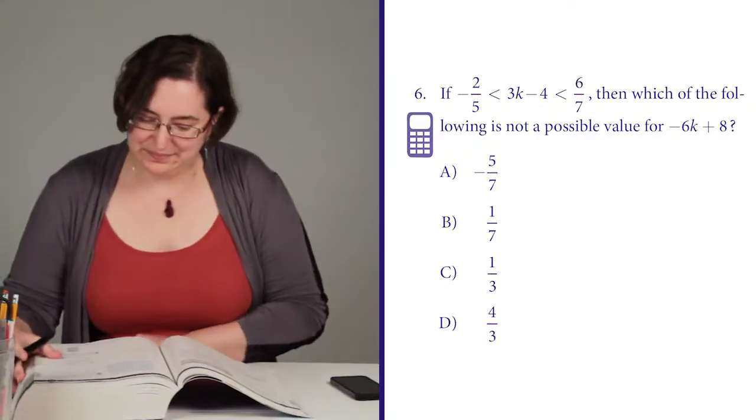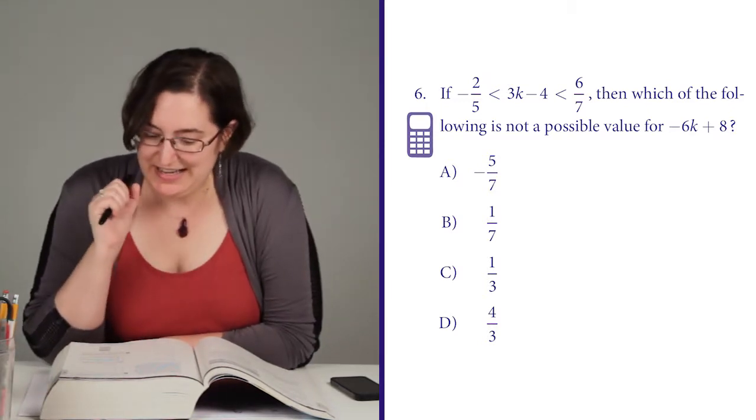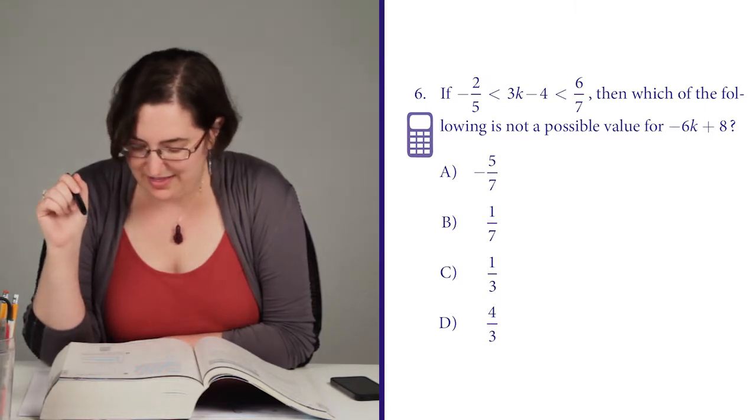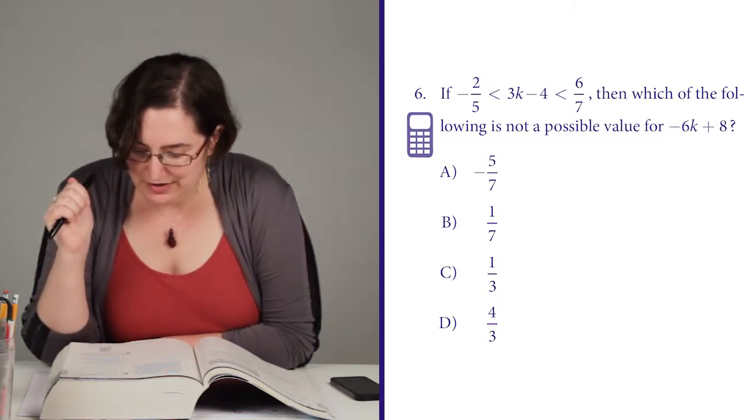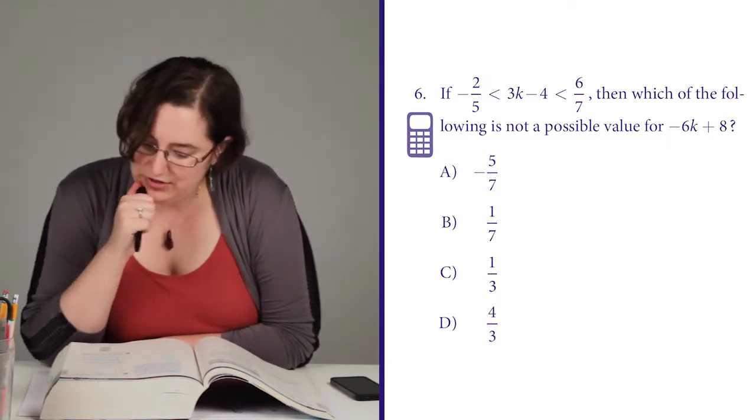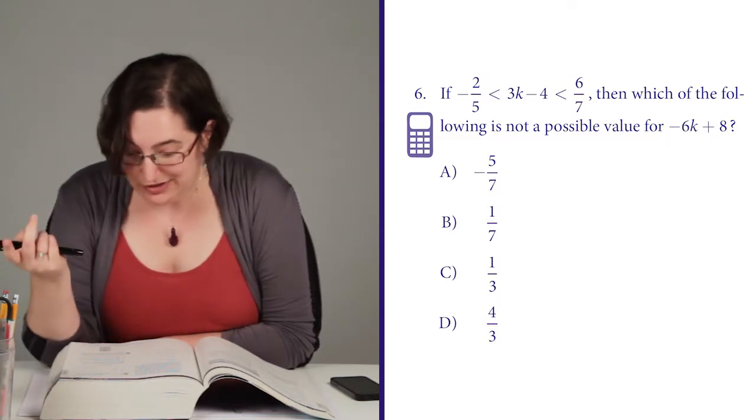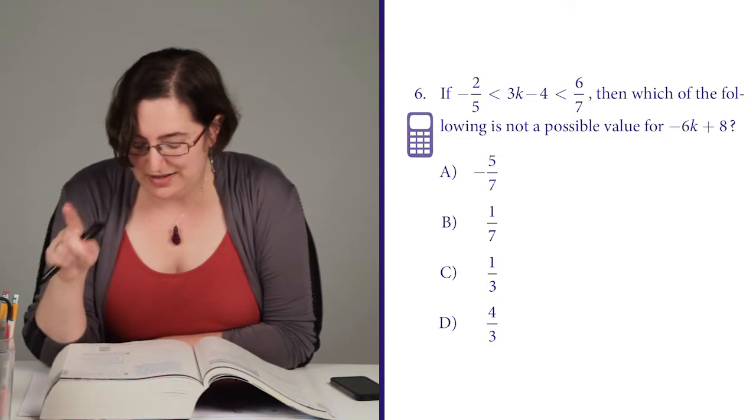All right. If negative 2 fifths is less than 3k minus 4, and that's less than 6 sevenths, which of the following is not a possible value for negative 6k plus 8? Interesting. So I'm not actually solving for k here.